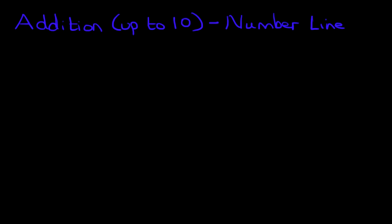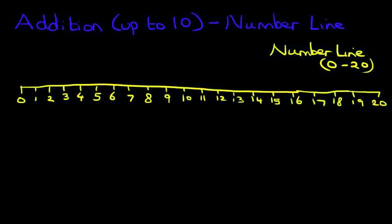Now, we've done the number line before. Here's one we drew earlier. This is our number line from 0 to 20. Remember, a number line can start at any number and end at any number. Ours goes from 0 to 20.